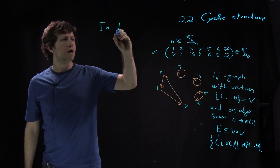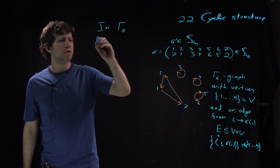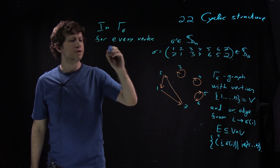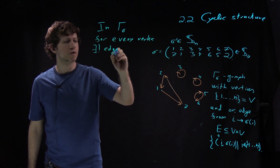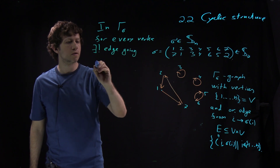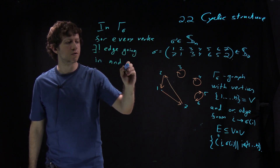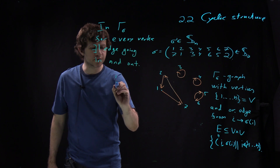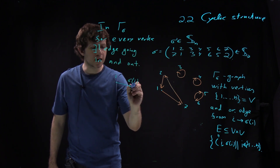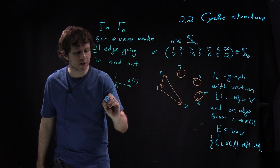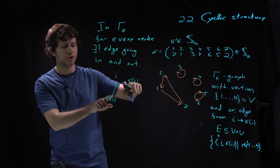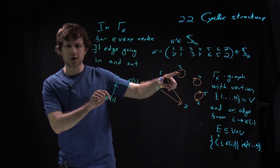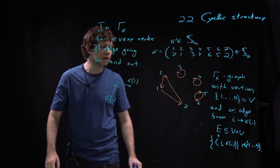This graph gamma sigma has a special property: for every vertex there exists a unique edge going in and out. If you take vertex i, there is an edge going to sigma(i), and since sigma is a bijection, there is an incoming edge from sigma inverse of i. These two vertices may be distinct or may coincide.